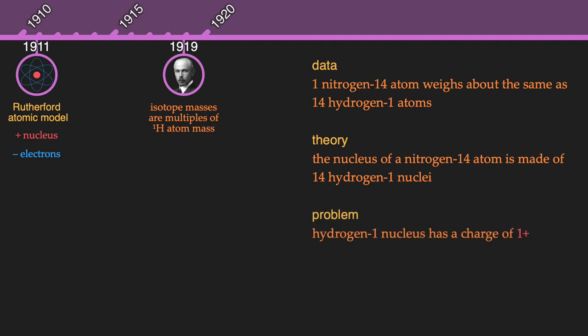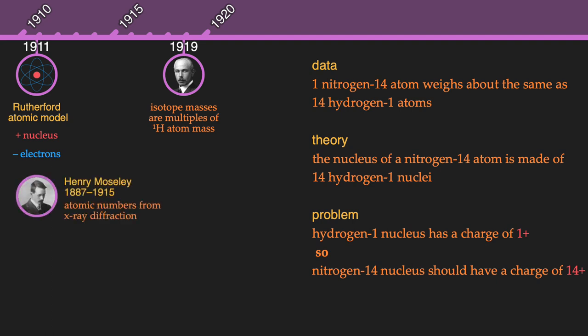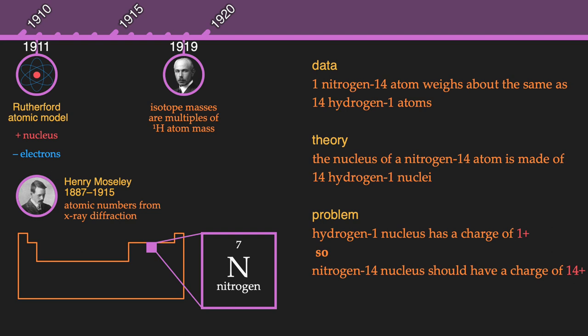Since each hydrogen nucleus has a charge of 1+, that would mean that the nitrogen nucleus should have a charge of 14+. However, X-ray diffraction experiments had shown that the nucleus of an atom has a charge equal to its atomic number, or the position on the periodic table, which at the time was defined by the number of electrons an element had. So the nucleus of a nitrogen atom should have a charge of 7+, not 14+.